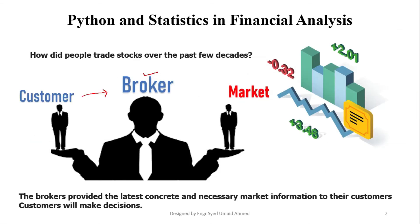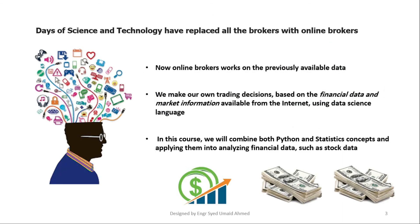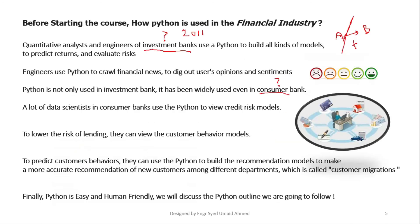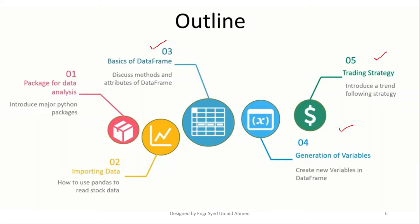At the end of this video you will find a PDF document with the complete course outline, named as Financial Computer Simulation. We first asked about how in the past, stock trading was done through brokers who had market information, but that has been replaced. Now we have online brokers that are totally based on data, based on statistics, and based on previously available market information. We are going to use Python for fetching this information and uncovering the hidden secrets in financial data using financial and statistical standards.